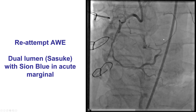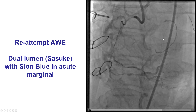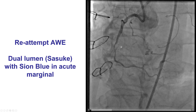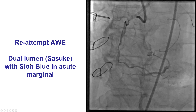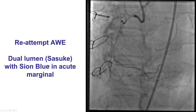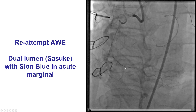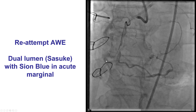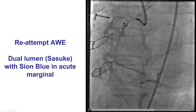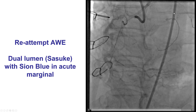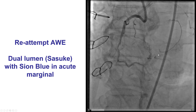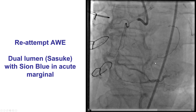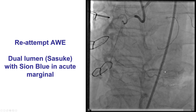We tried briefly antegrade, but that was unsuccessful, and we decided to try crossing using a dual-lumen microcatheter — a Sasuke — having a Sion Blue workhorse wire into the acute marginal. But once again, the wire is not moving in the course of the vessel. You can also appreciate the tortuosity of the ipsilateral collateral supplying the right posterolateral.